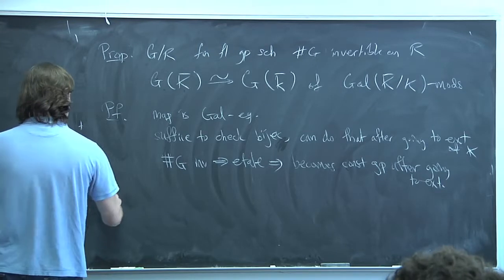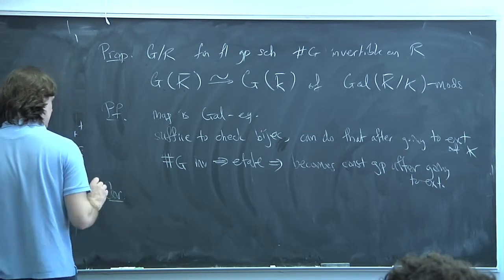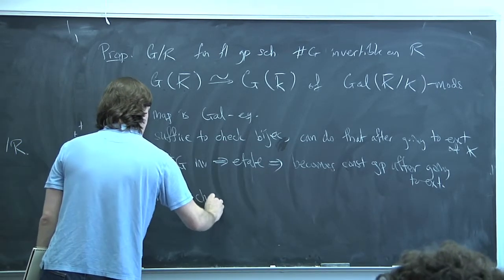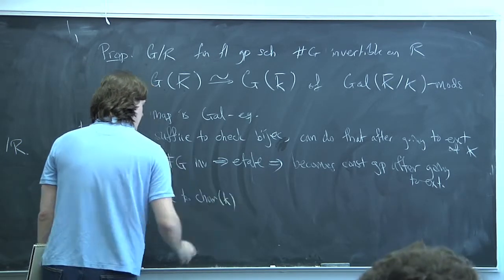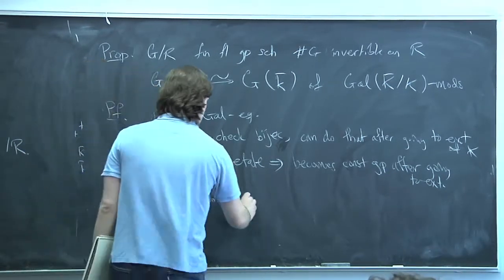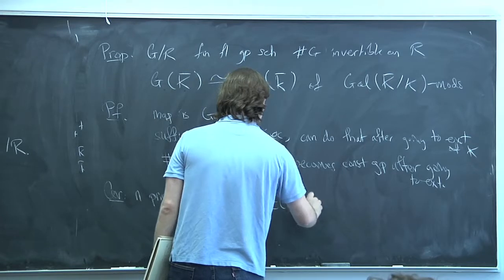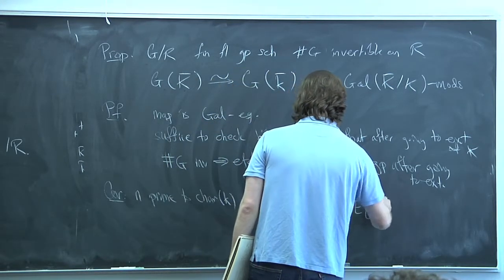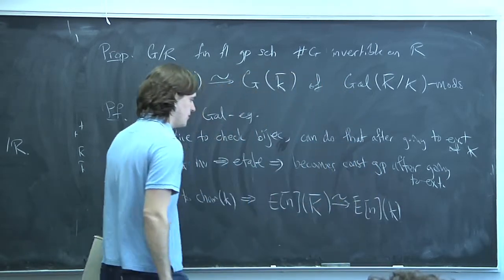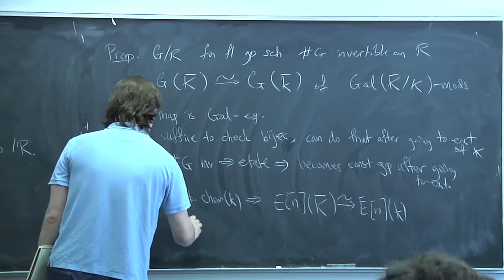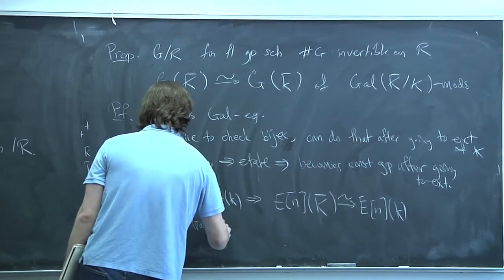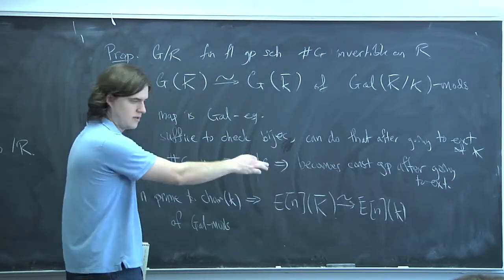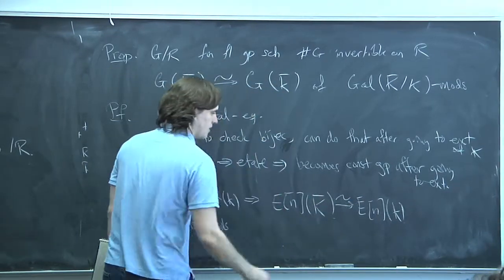Explicitly, in the elliptic curve case: if N is prime to the characteristic of little k, and E has good reduction, then the map from the N-torsion of E(K-bar) to the N-torsion of Ē(k-bar) is an isomorphism of Galois modules. That implies in particular that the N-torsion is unramified as a Galois representation, because the inertia acts trivially downstairs.